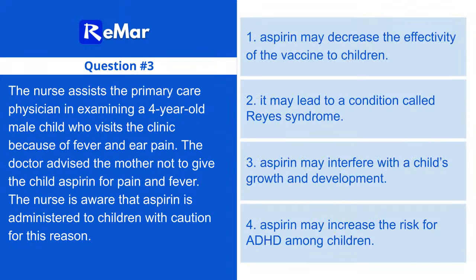Question number three: The nurse assists the physician examining a four-year-old with fever and ear pain. The doctor advised the mother not to give aspirin for pain and fever. The nurse is aware that aspirin is administered to children with caution because: number one — it may decrease vaccine effectiveness; number two — it may lead to Reye's syndrome; number three — it may interfere with growth and development; or number four — it may increase the risk of ADHD. The correct answer is number two — Reye's syndrome.